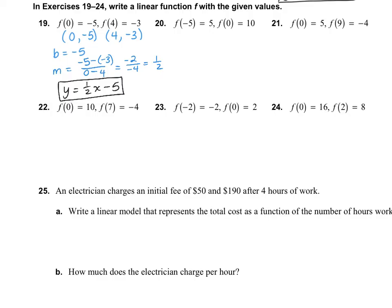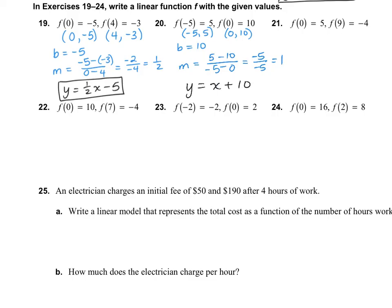Number 20: our two points are negative 5 comma 5 and 0 comma 10. The y-intercept b is 10, taken from the point with x equals 0. Using the slope formula with y numbers on top and x numbers on the bottom, that gives negative 5 over negative 5, which is positive 1. So the answer is y equals x plus 10. Remember, I don't need to write the 1 in front of the x, but I would not mark it wrong on a test or quiz.